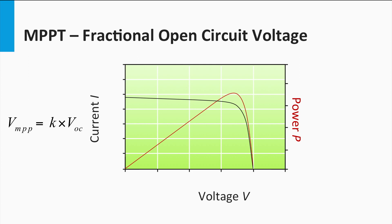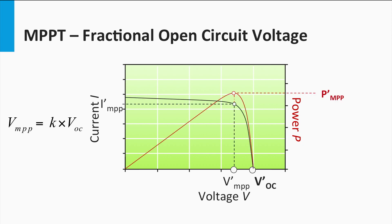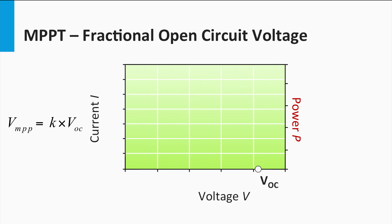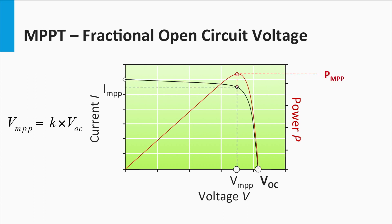How does the MPP tracking device measure the open-circuit voltage of a solar module under operation? This is done by disconnecting the PV module from the load momentarily — in other words, the PV current is set to zero so as to measure the open-circuit voltage. Although temporary, this results in a loss in production of PV power, and this handicap only worsens if this measurement has to be made more frequently.